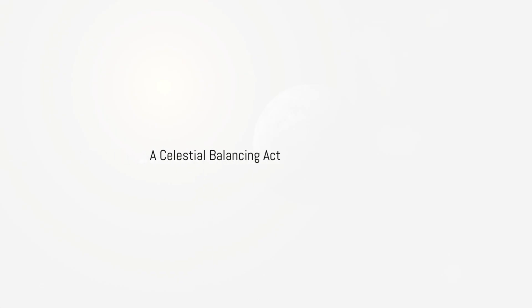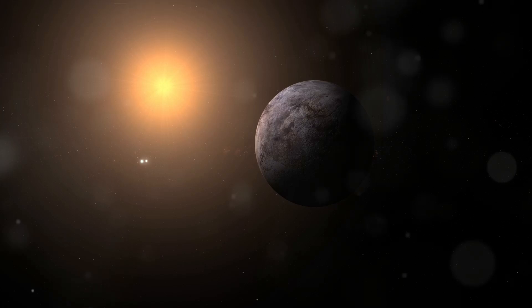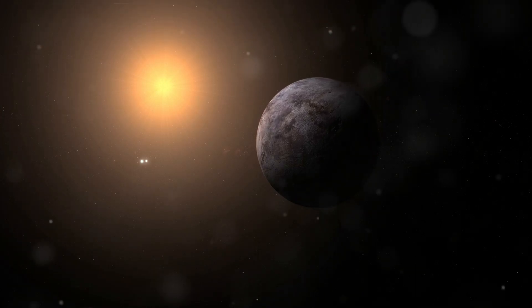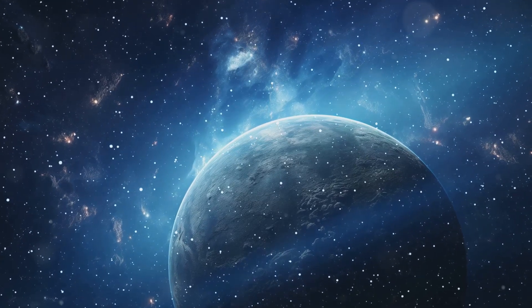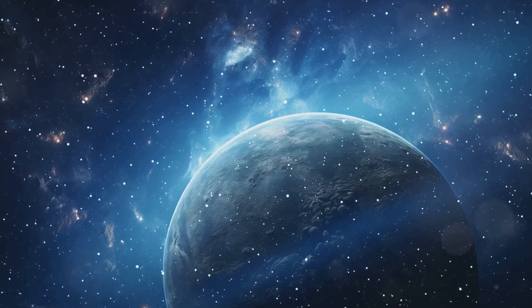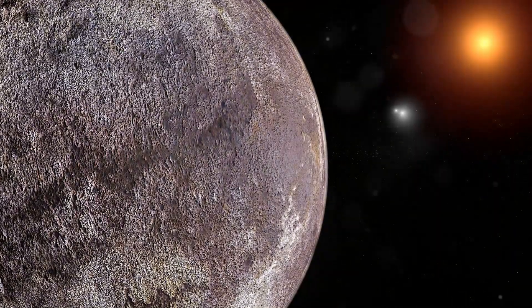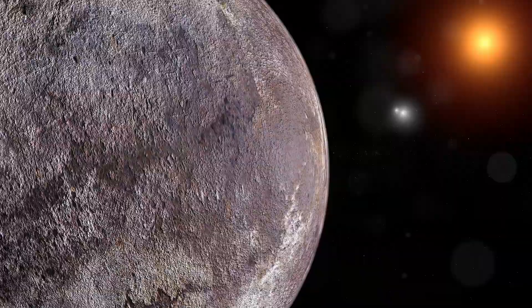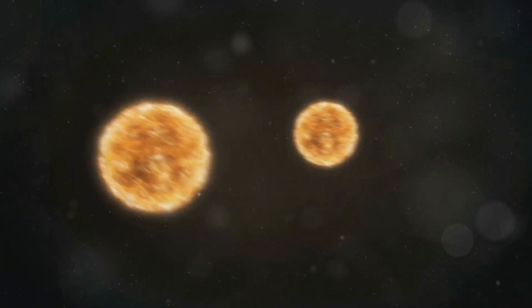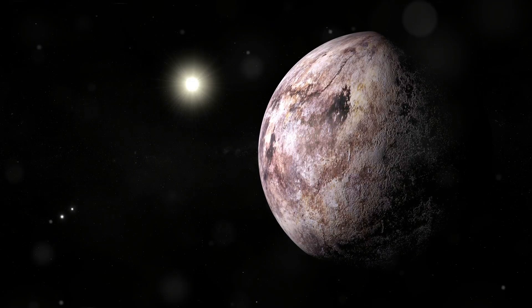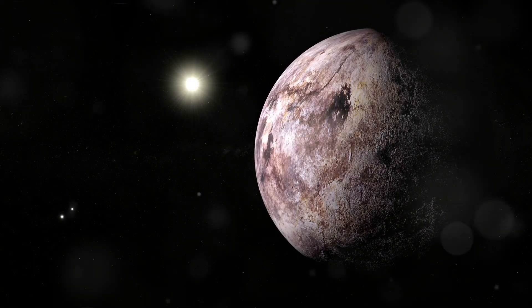One of the key factors in determining a planet's potential for life is its location within the habitable zone. This is the region around a star where temperatures are just right for liquid water to exist on a planet's surface. Finding the habitable zone around a single star is relatively straightforward. However, in a system with three stars, the gravitational dance becomes far more complex. The habitable zone shifts and changes as the stars orbit each other.